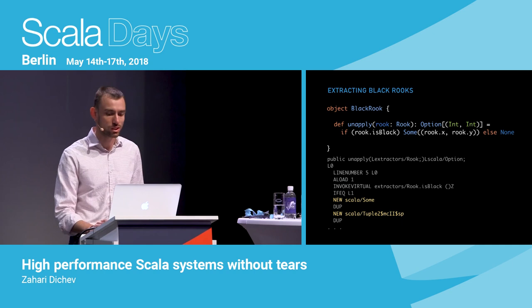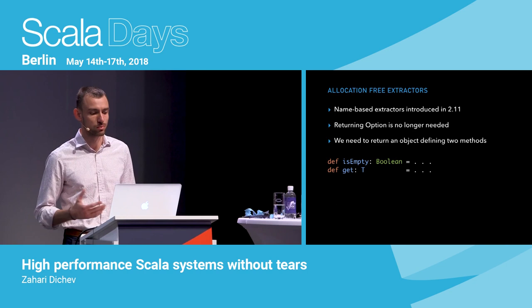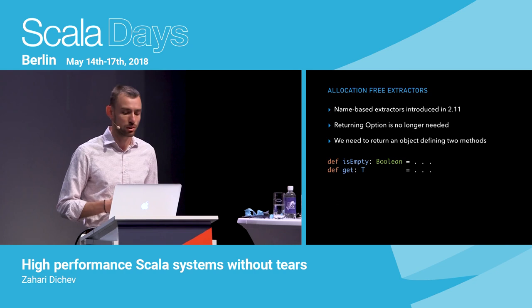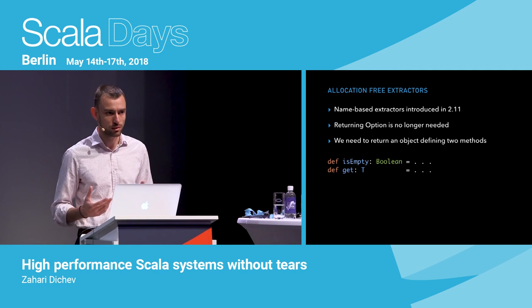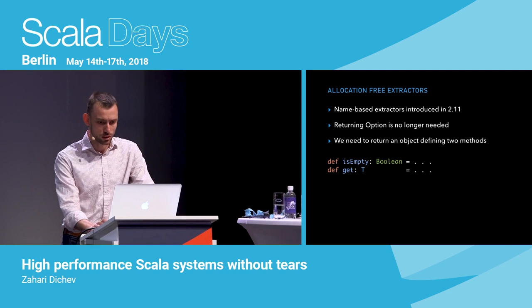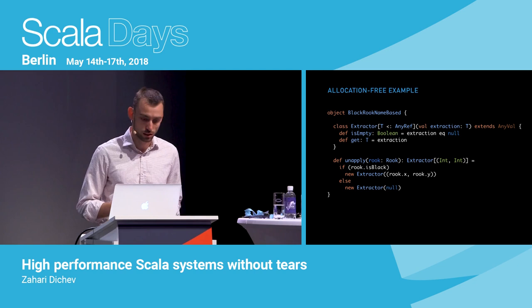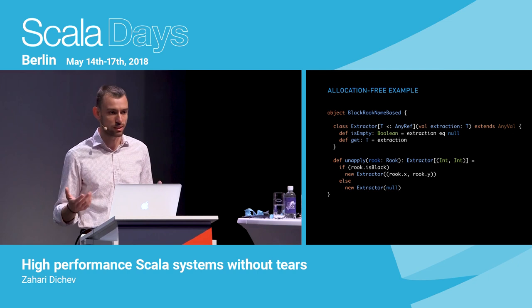Can we do better? It turns out yes. We can use name-based extractors, introduced in Scala 2.11, to eliminate the need for using an Option. The requirement for name-based extractor objects is only to return an instance of a type that defines two methods: isEmpty and get. We can rewrite our extractor to return an extractor object defining these two methods, using null as a sentinel value to determine whether the extraction is empty or not.